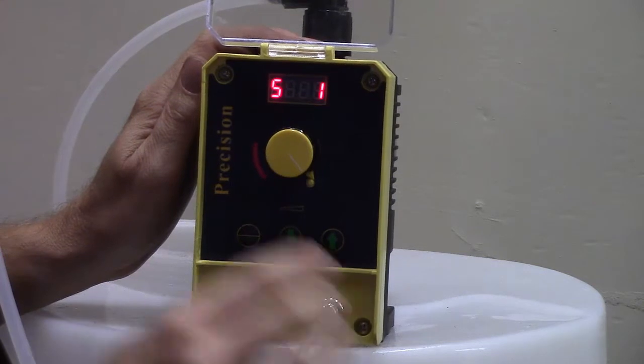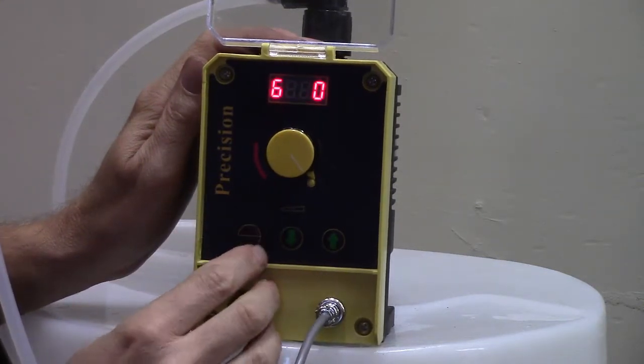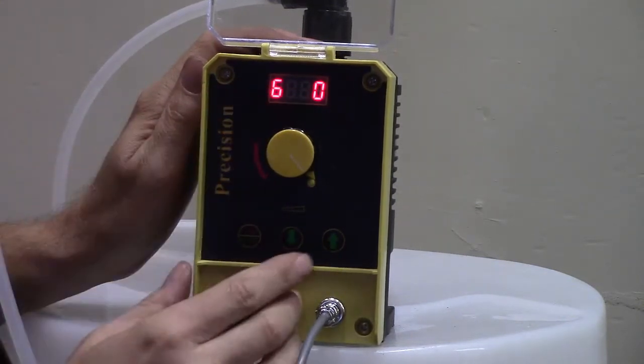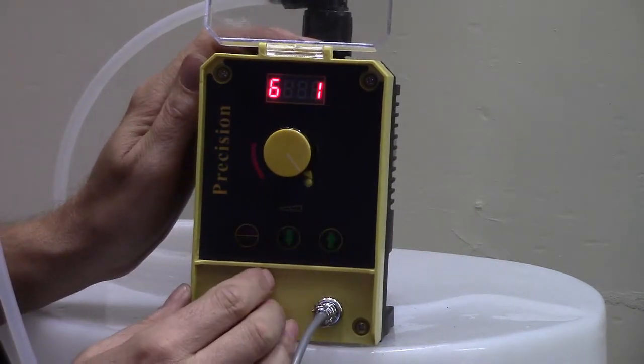How many times is it going to pulse? If it's set to pulse zero times, it's not going to pump any chlorine. Let's set it for one so it pulses one time.